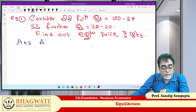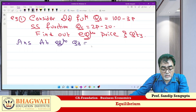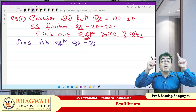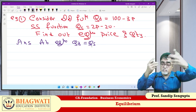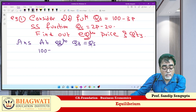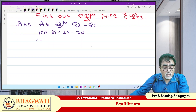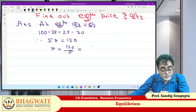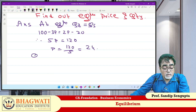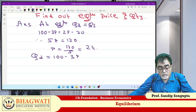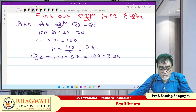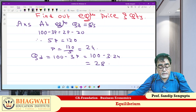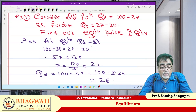Answer: at equilibrium, Qd = Qs. So 100 − 3p = 2p − 20. Therefore 5p = 120, so p = 120/5 = 24. Then substitute: Qd = 100 − 3 × 24 = 100 − 72 = 28. So equilibrium price is 24 and equilibrium quantity is 28.